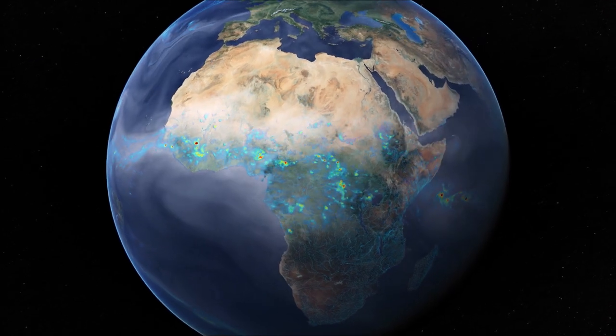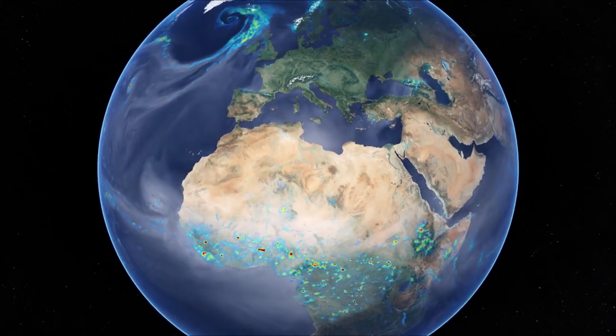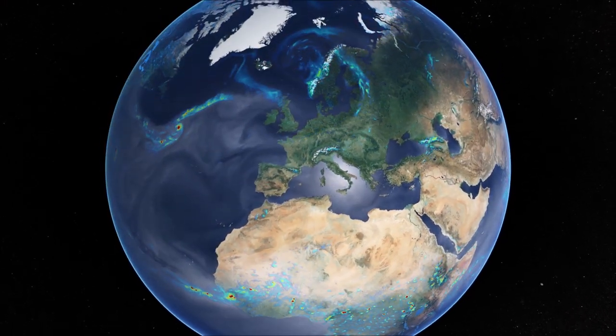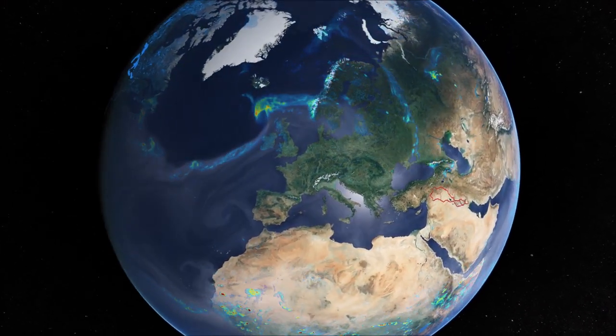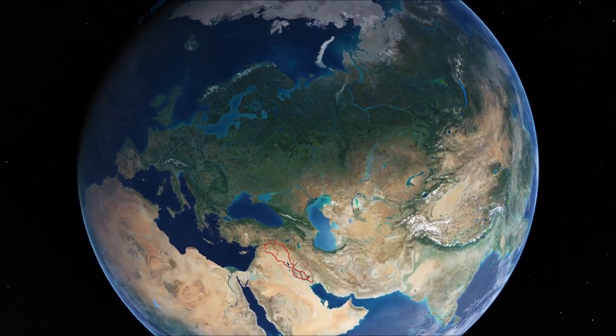Access to water has defined where human populations have flourished. Civilization emerged between the Tigris and Euphrates rivers on the Fertile Crescent of Mesopotamia in modern-day Iraq.